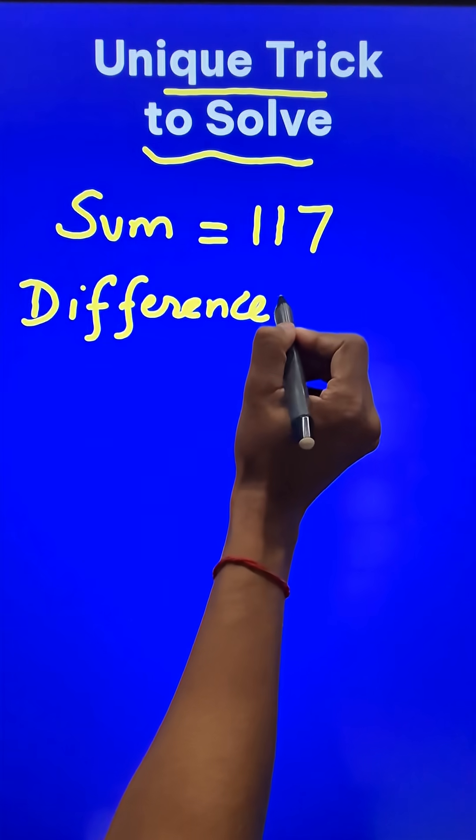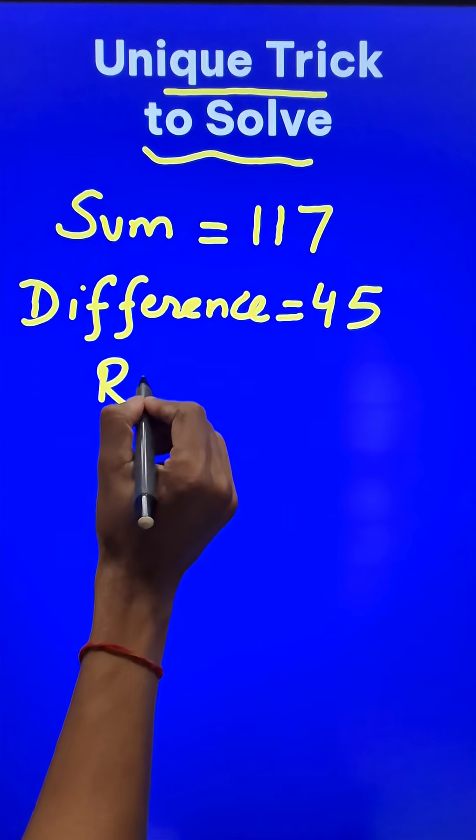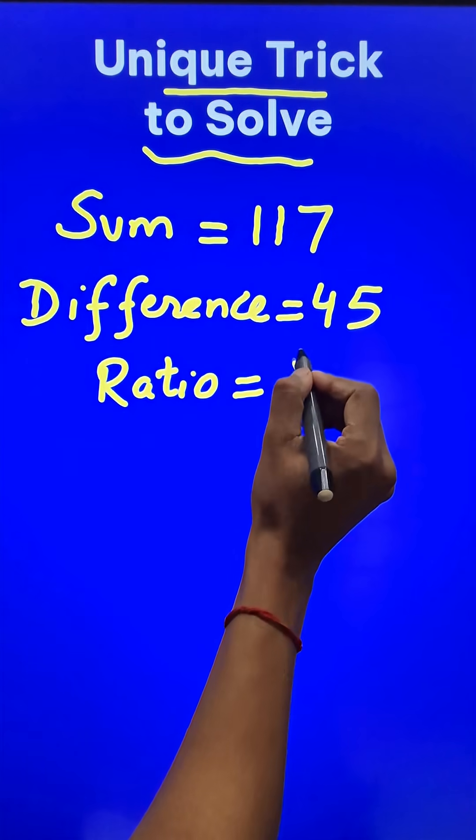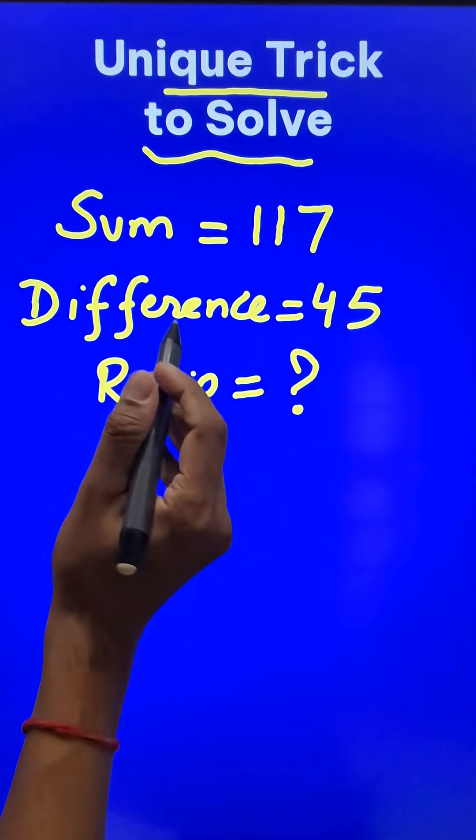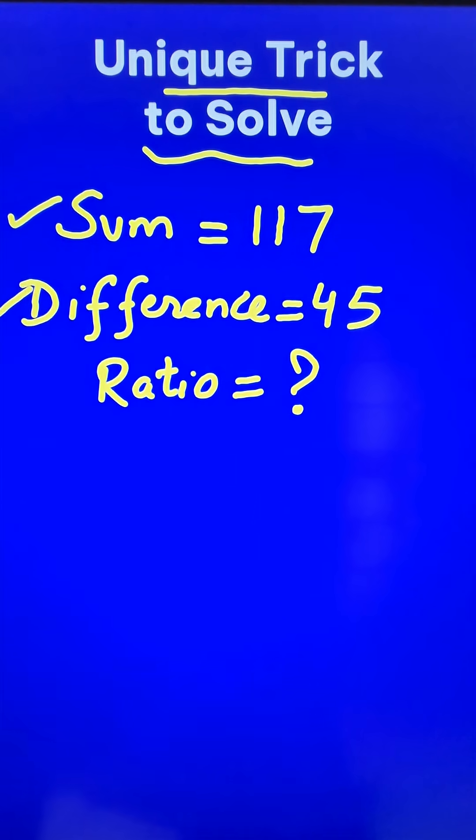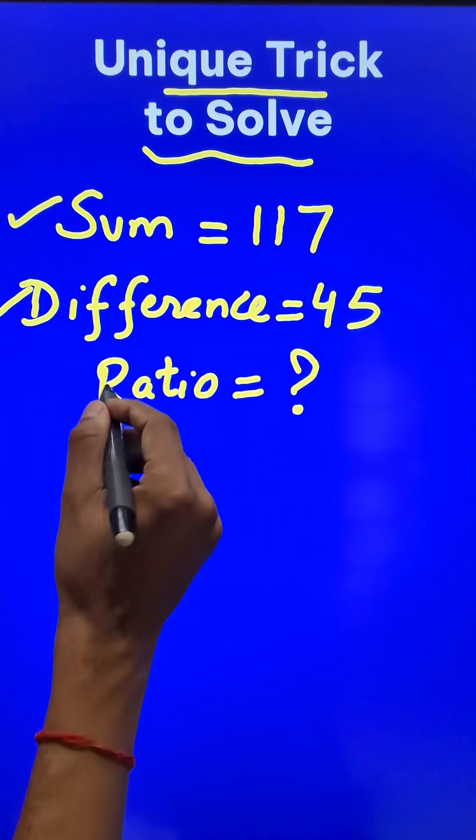is given to you as 45 and we are asked to find the ratio of the two numbers or you may be asked to find the two numbers themselves. There is a direct trick to solve this question. Now the sum and the difference are given to you. So what do you do to find the ratio?